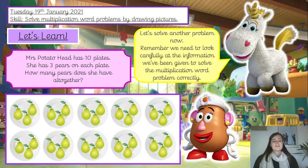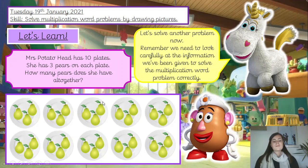Now what do you need to do? Pause the video and see if you can have a go. Hopefully you know that the next thing we need to do is find the answer. You could have counted them up in threes or counted them individually — whichever you're more comfortable with — and hopefully you've found that the answer is 30. Mrs Potato Head has 30 pairs altogether. Well done if you got that one. Good job.